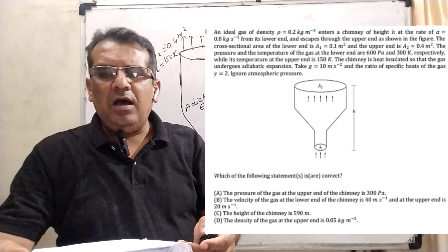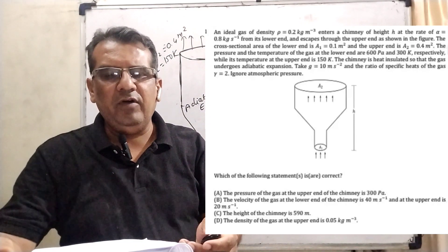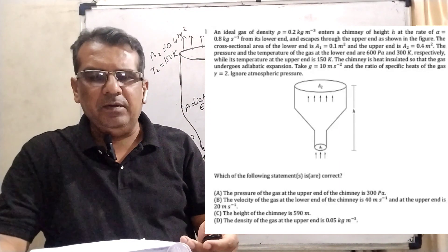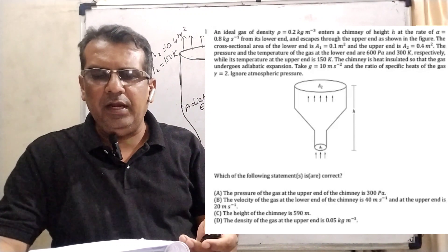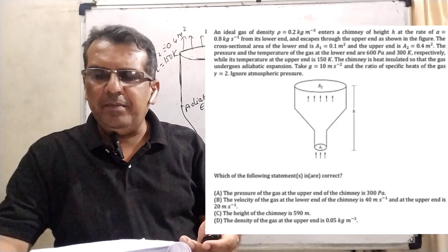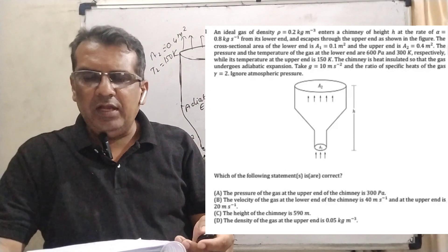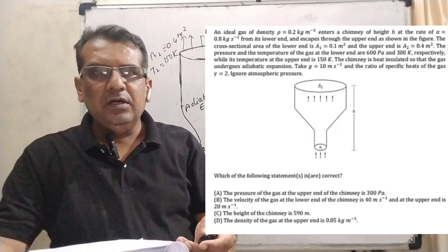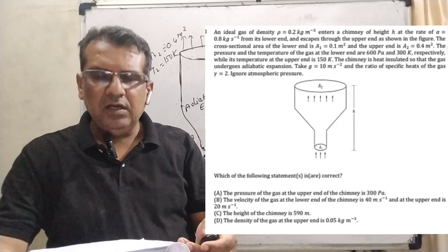Now here is the question. An ideal gas of density rho equal to 0.2 kg per meter cube enters a chimney of height h at the rate of alpha equal to 0.8 kg per second — here alpha means dm/dt, the change of mass with respect to time. It enters from the lower end and escapes through the upper end. The cross-section area of the lower end is A1 equal to 0.1 meter square and the upper end is A2 equal to 0.4 meter square. The pressure and temperature of the gas at the lower end are 600 Pascal and 300 Kelvin respectively, while the temperature at the upper end is 150 Kelvin. The chimney is heat insulated so the gas undergoes adiabatic expansion. Take g equal to 10 m/s² and the ratio of specific heats gamma equal to 2.